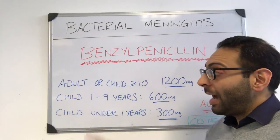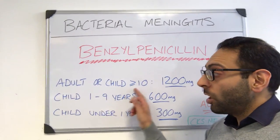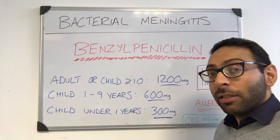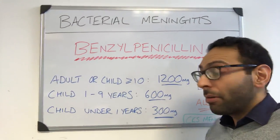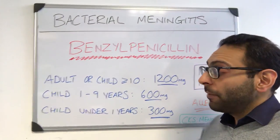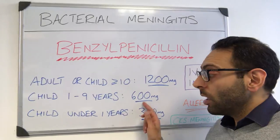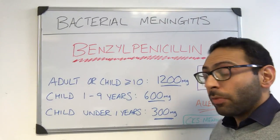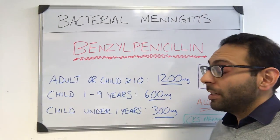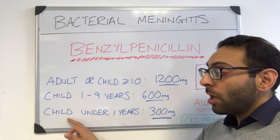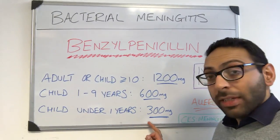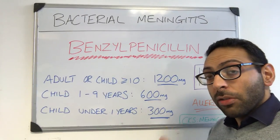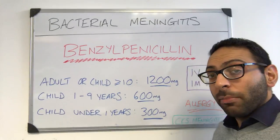There are three doses to remember. For an adult or child aged 10 or above, it's 1200 milligrams of benzoyl penicillin as a single parenteral dose. For a child between one and nine, the dose halves to 600 milligrams as a single parenteral dose. For a child under the age of one, it halves again to 300 milligrams as a single parenteral dose.